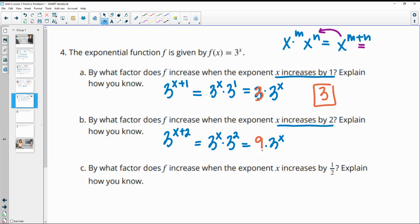And then 3 to the 2nd is just 9. So we have 9 times our original 3^x. So this is increasing by a factor of 9.